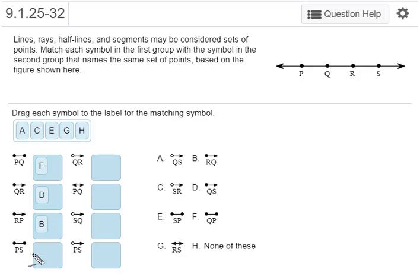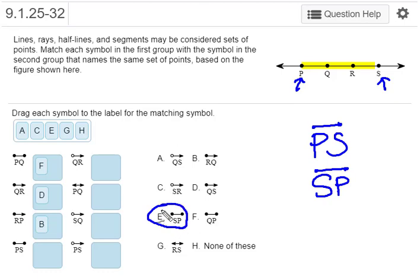The next one is PS with a segment symbol on top of it. PS represents all the points between P and S. Now we need to find another way to name PS. The rule for line segments is you have to have letters representing both endpoints, so we have to use P and S. That's not optional, but the order is, because line segments don't have a direction. So you're allowed to turn that around and call it SP. We're going to match up PS with SP, which is option E.